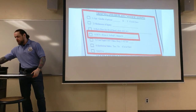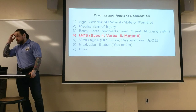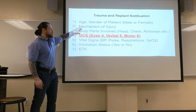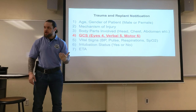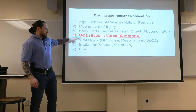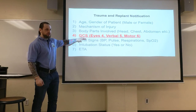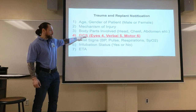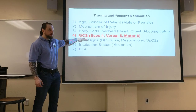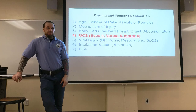For a trauma notification, it's similar — still age and gender, but now you include the mechanism of injury: pedestrian struck, motor vehicle collision, whatever the case. State the body parts involved — head, neck, abdomen — and the GCS score. The GCS is important because below a certain number, you'll need to perform certain interventions. It also tells the hospital who to alert and helps them assemble the right team. Every trauma center has established metrics — if you report a GCS less than 8, their trauma team must be assembled within a set time frame.